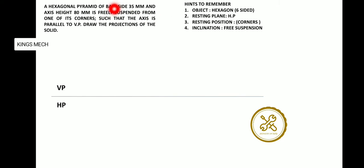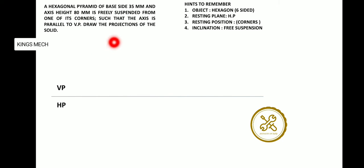The free suspension problem — what are the hints to remember? The object is a hexagon, a six-sided resting plane. From one of its corners, the axis is parallel to VP. That is a hexagon with axis parallel to VP. The resting position is definitely on HP, by means of one of its corners, freely suspended.